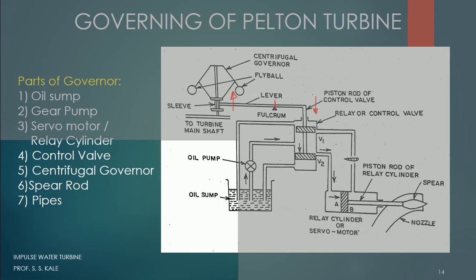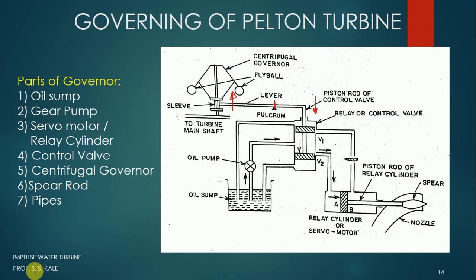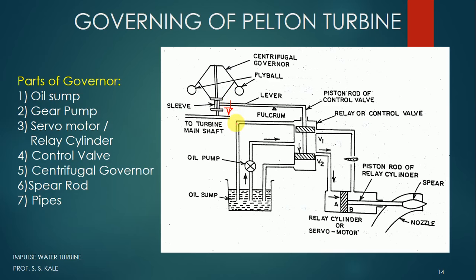Now consider the opposite — the low speed condition. When load on the turbine increases, the speed of the turbine reduces. When speed decreases, the fly balls move inward and the sleeve moves down. As the sleeve moves down, this side of the lever also moves down, and because of the fulcrum, the other side of the lever moves up. When this part of the lever moves up, the two pistons of the control valve also move upward.